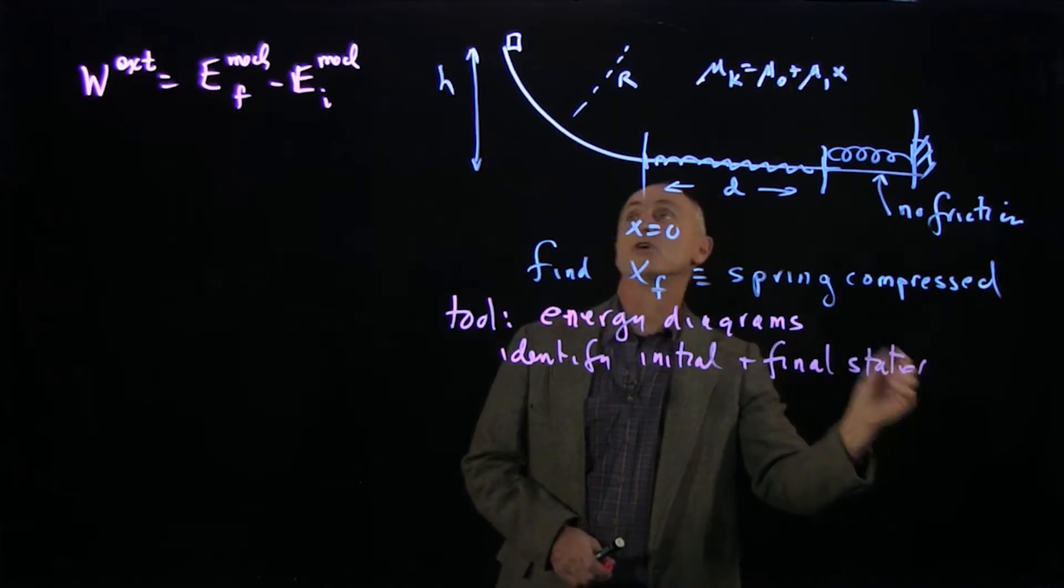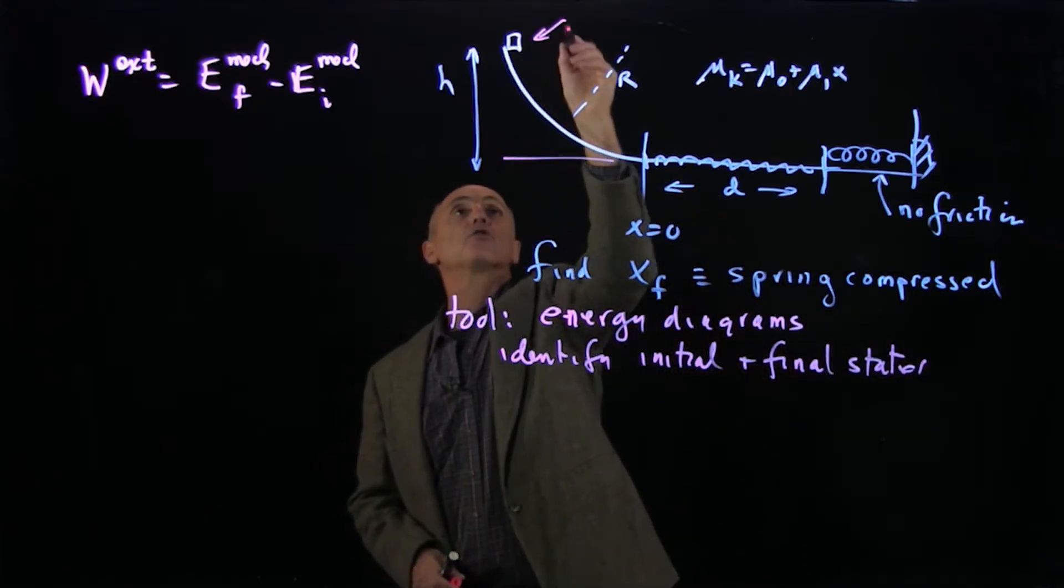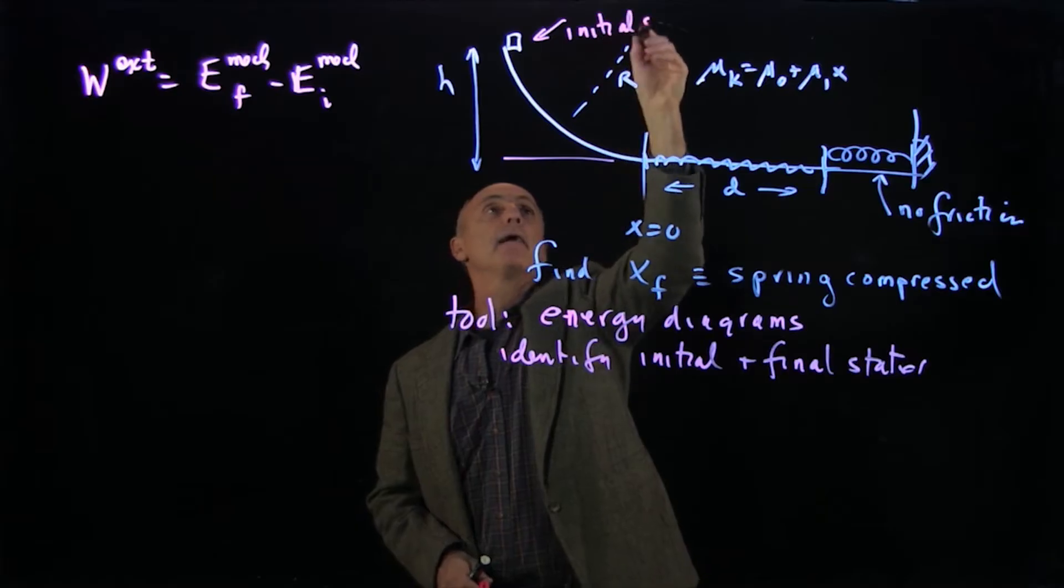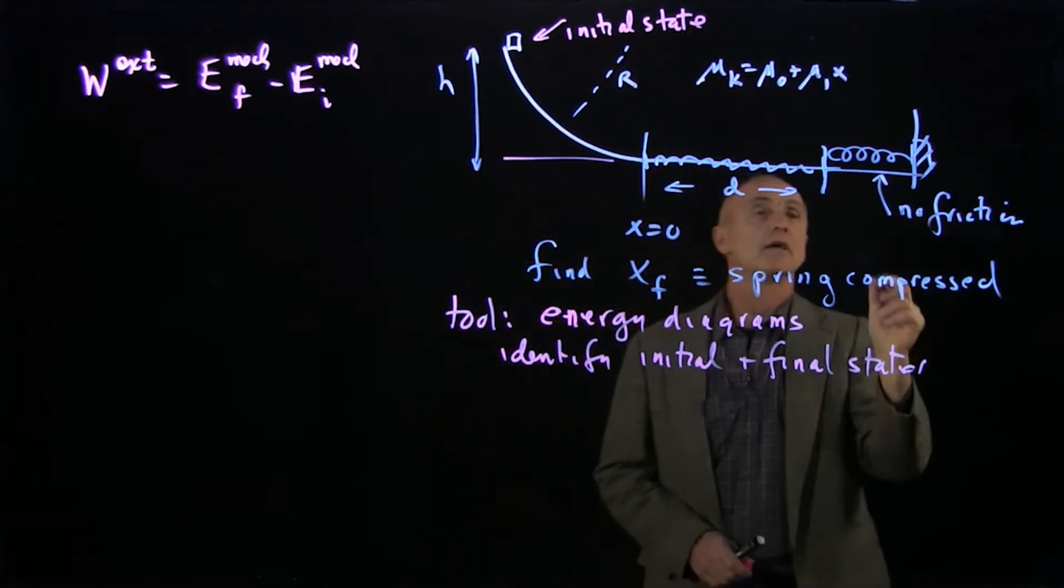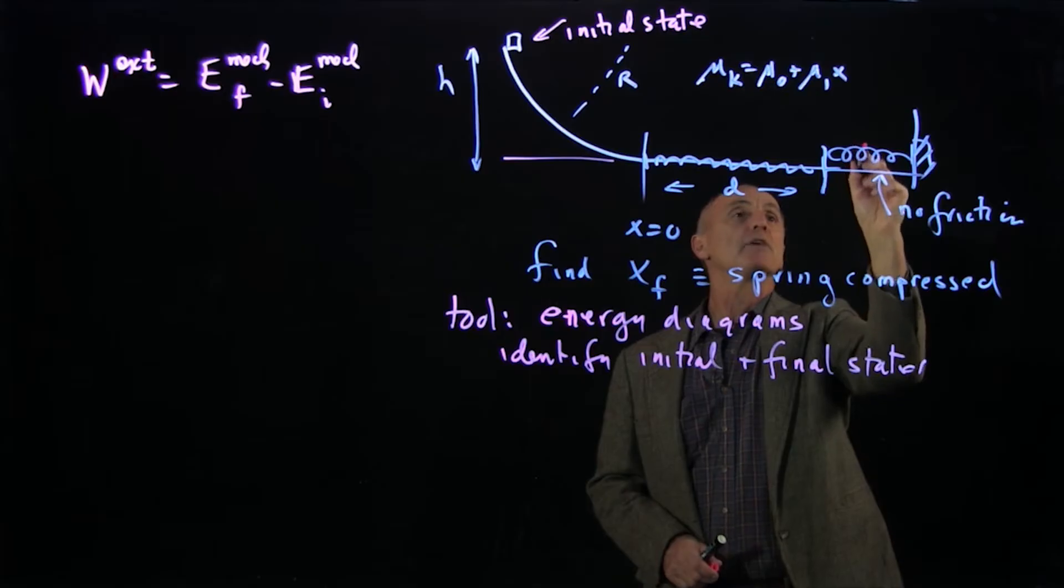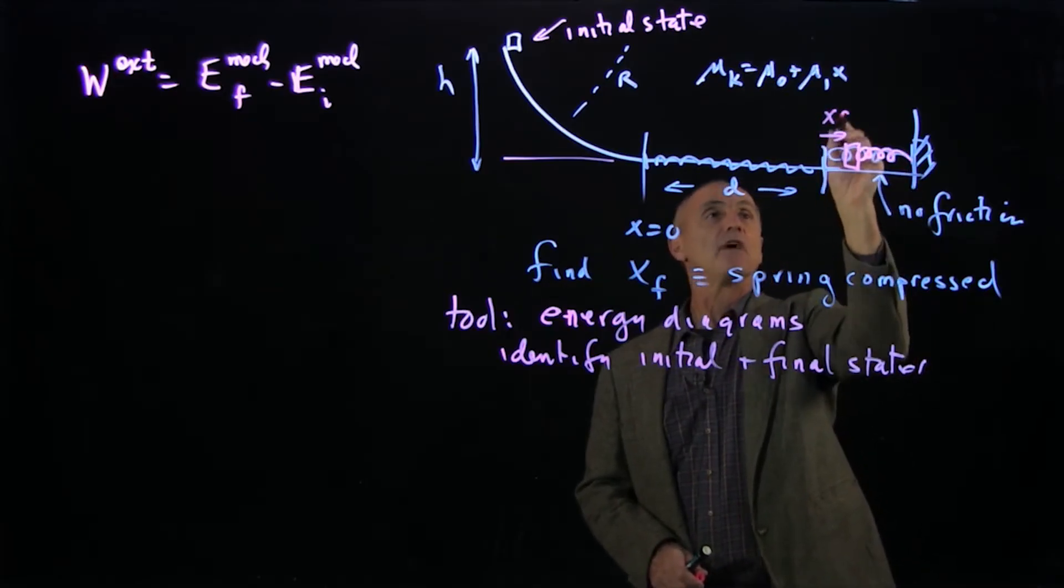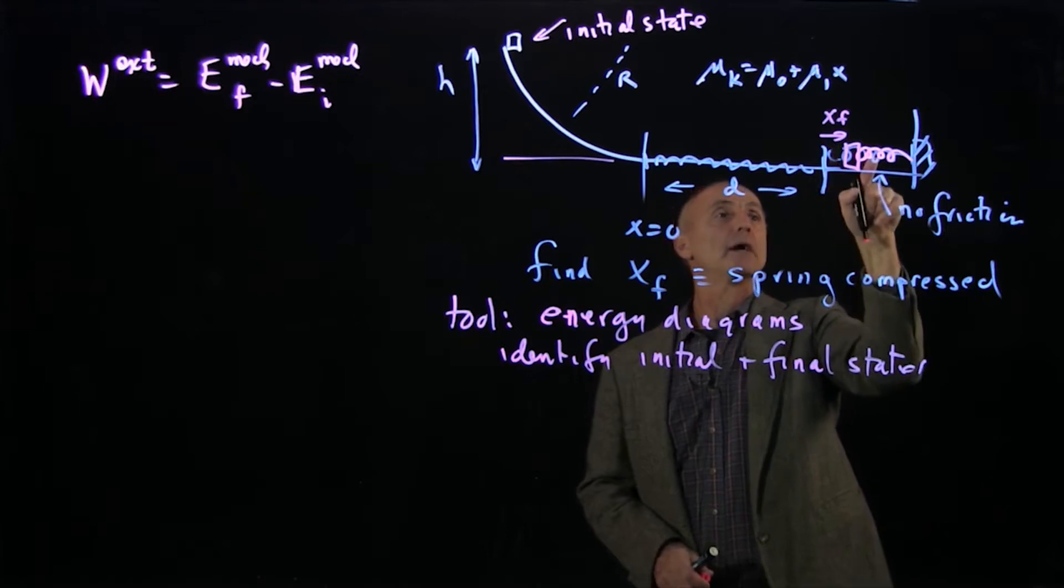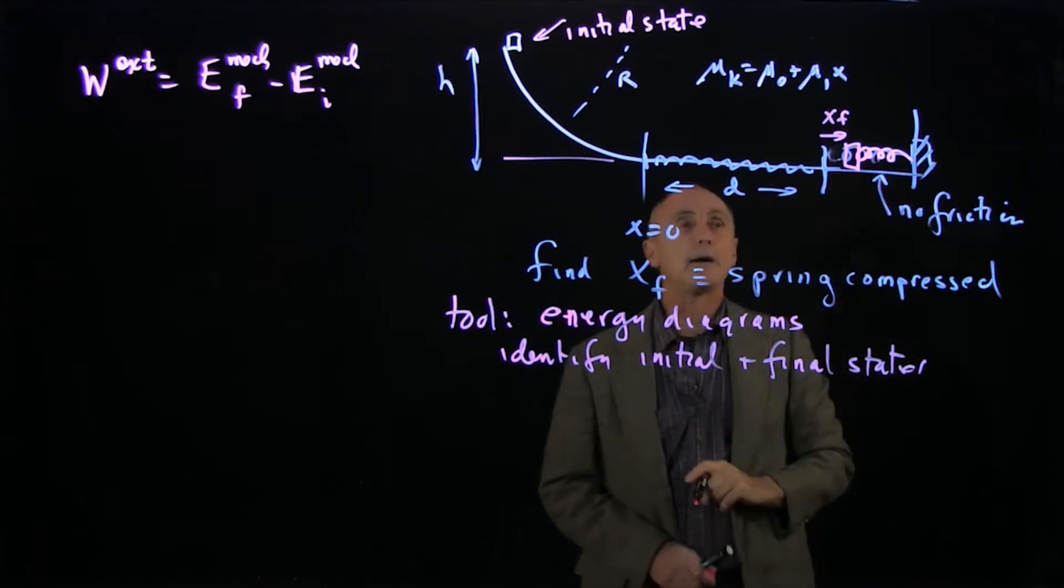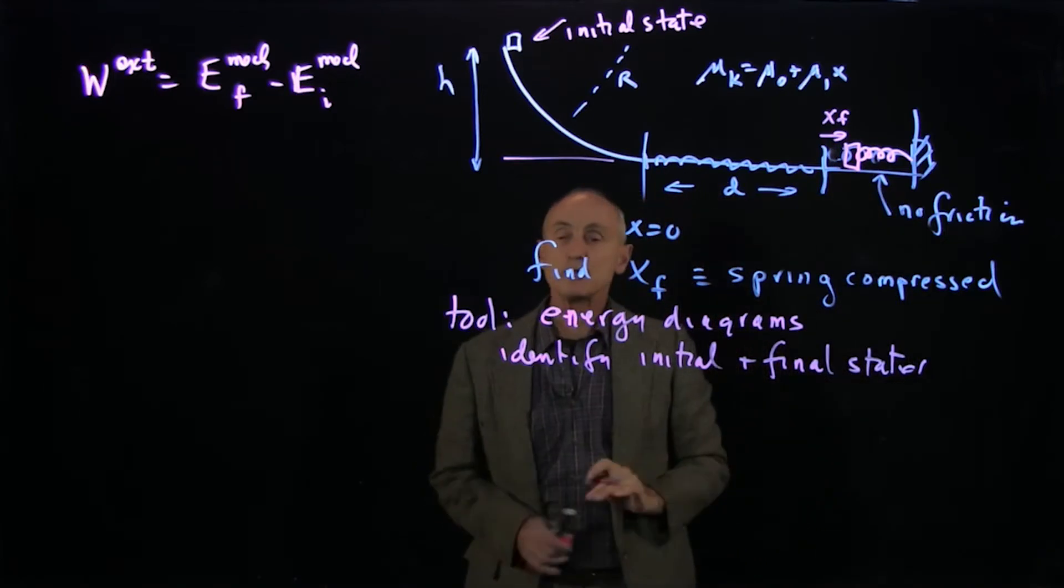So in our picture, here's our initial state. And I'll draw the final state in when the spring has been compressed a distance x final. So I drew it on my diagram. So we have initial and final states.